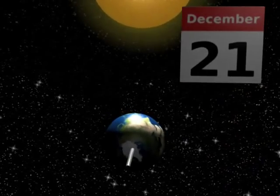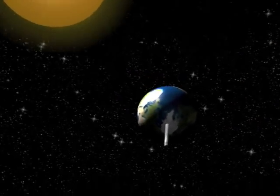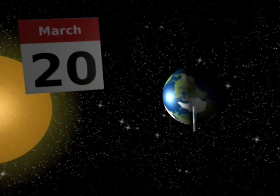Next is the winter solstice, when the northern hemisphere is pointing away from the sun. Following on is the spring equinox when day and night are equal lengths again.